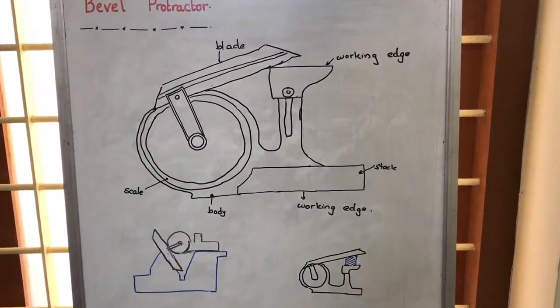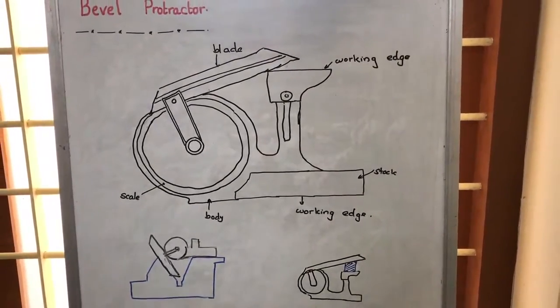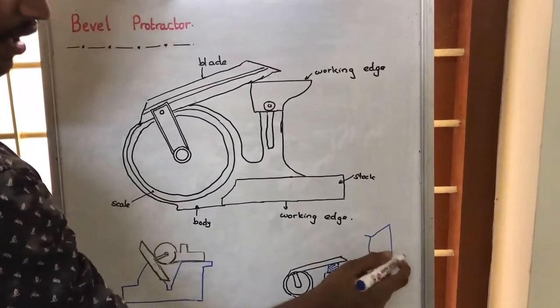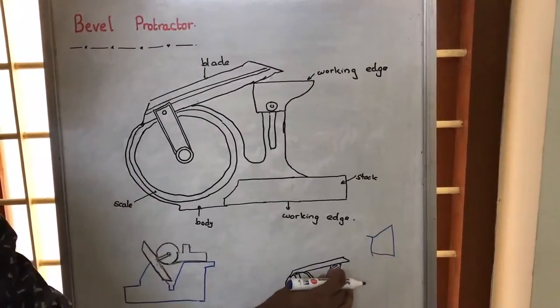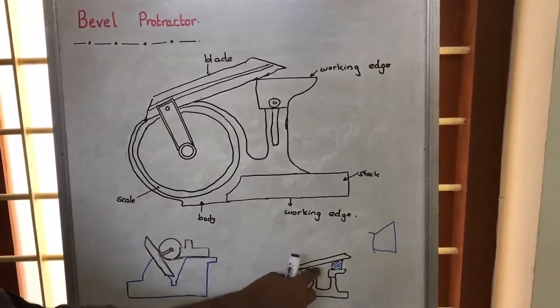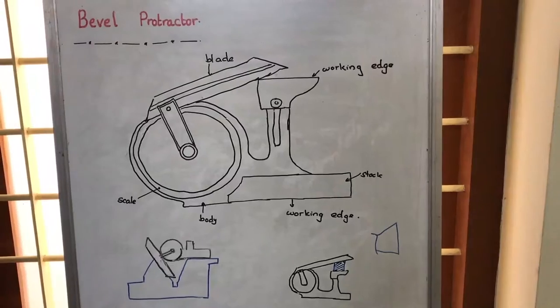Here we are measuring the angle of a structure. Let's say the structure is somewhat like this. What we do is we will keep the structure here and adjust the blade so that we are able to measure the reading from the scale.